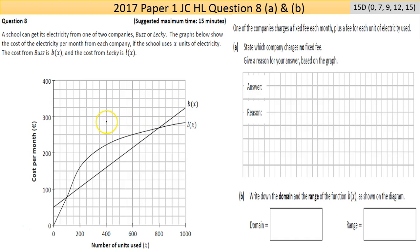So let's get stuck in. Question 8: A school can get its electricity from one of two companies, Buzz or Lecky. The graphs below show the cost of the electricity per month for each company. If the school uses x units of electricity, the cost from Buzz is described as B(x) and the cost for Lecky is L(x).